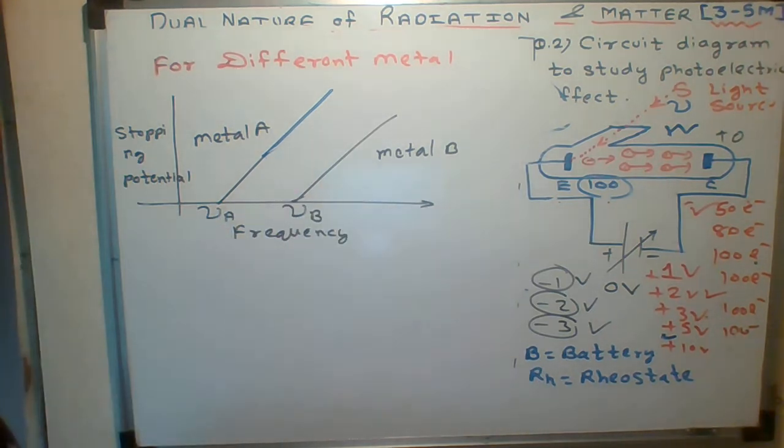Different threshold frequencies means stopping potential ranges will also be different. The theory I have given in the notes you can read, but you should understand the graph and graphical representation.